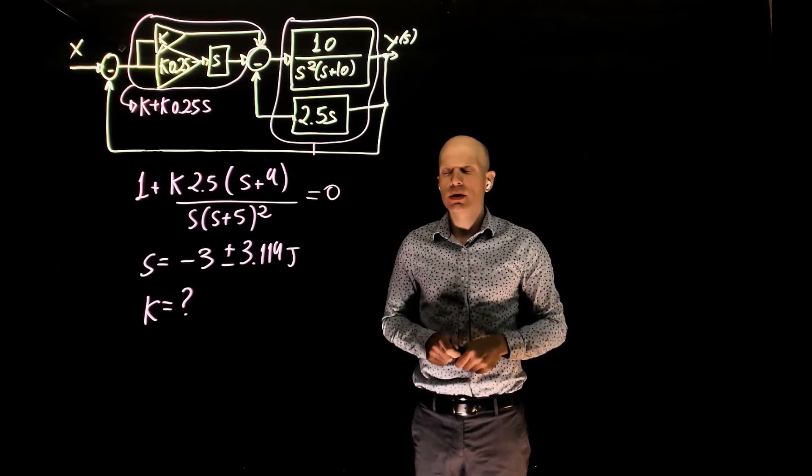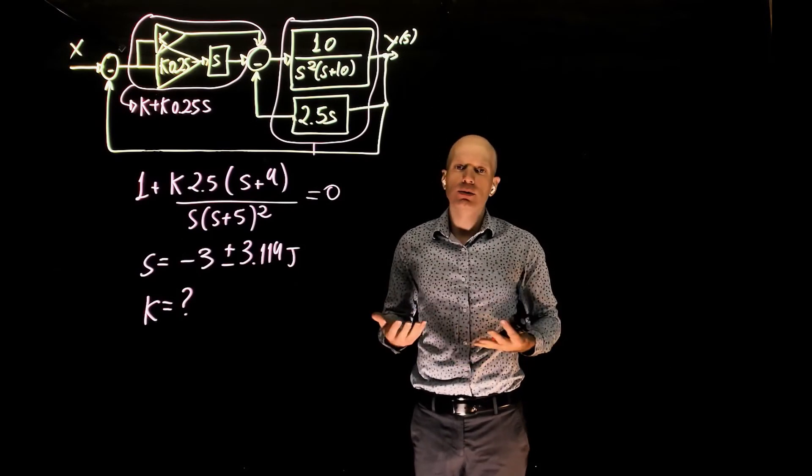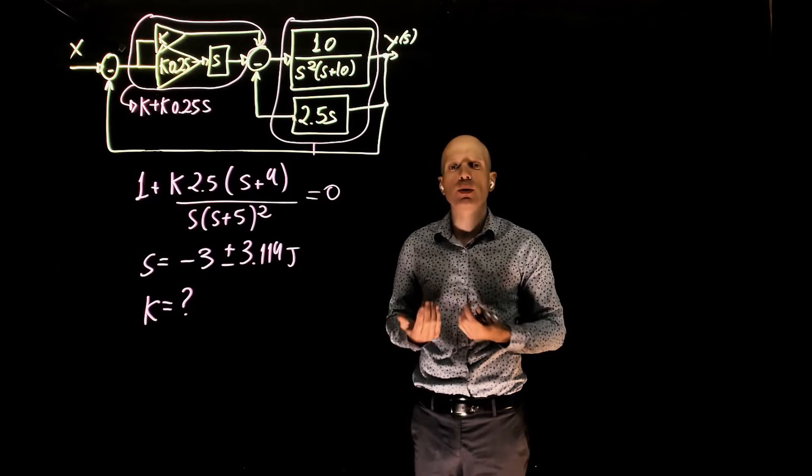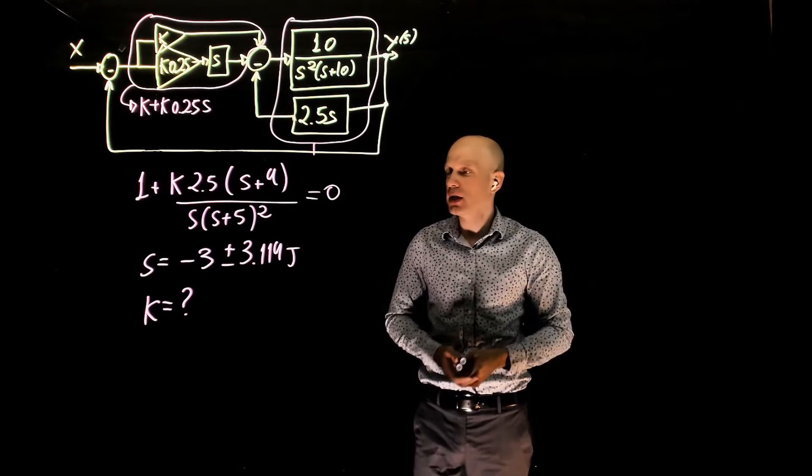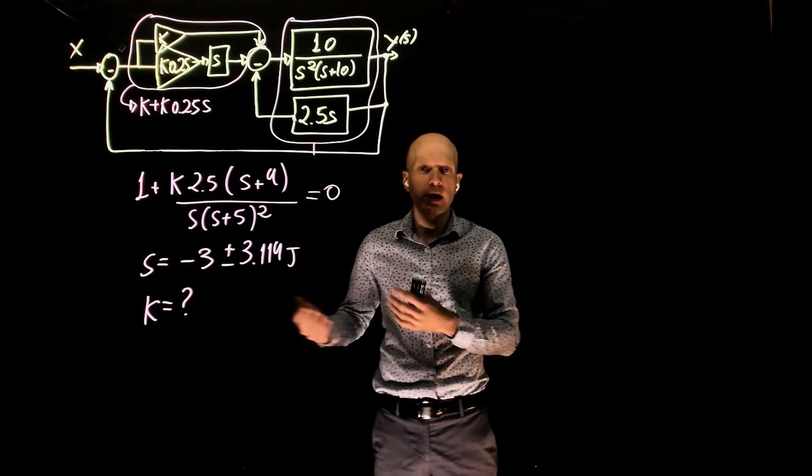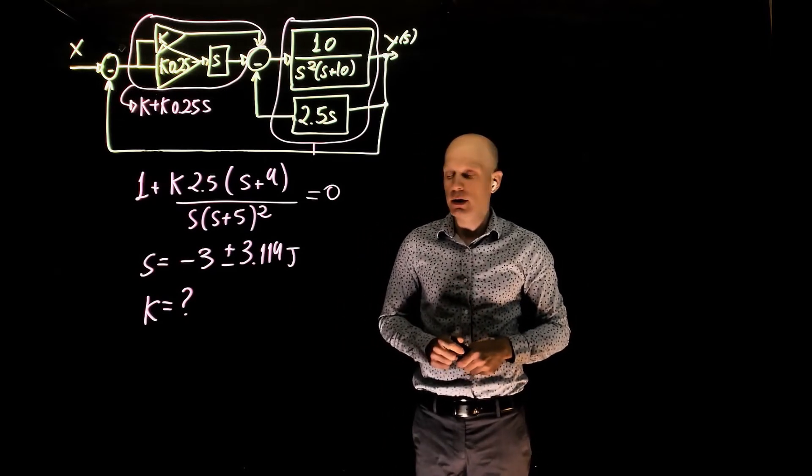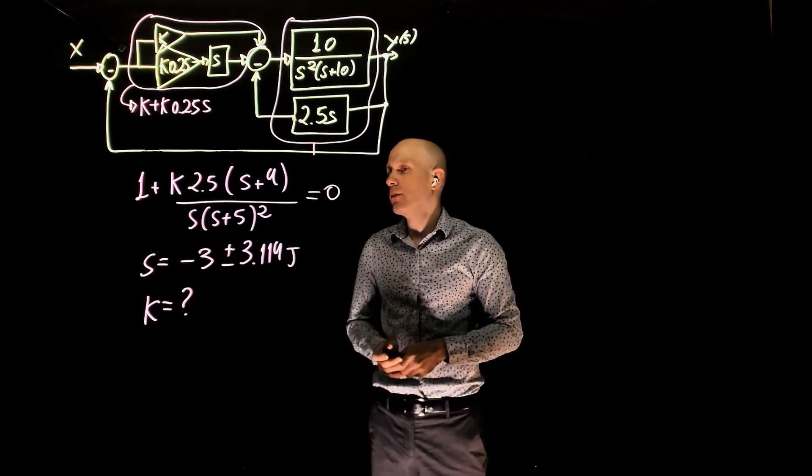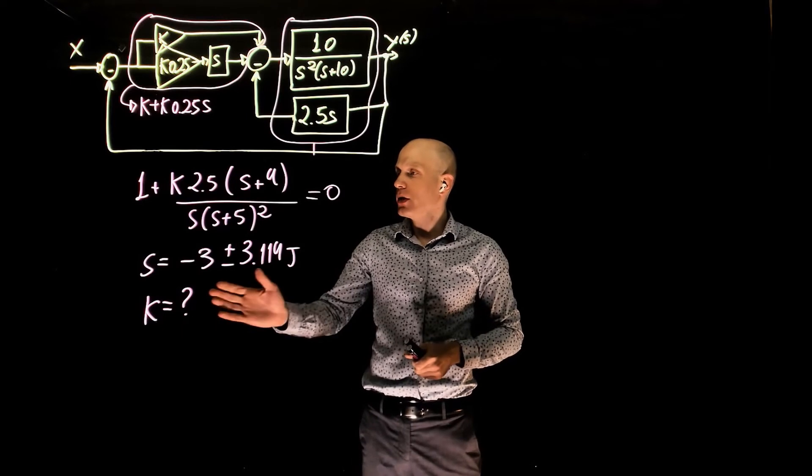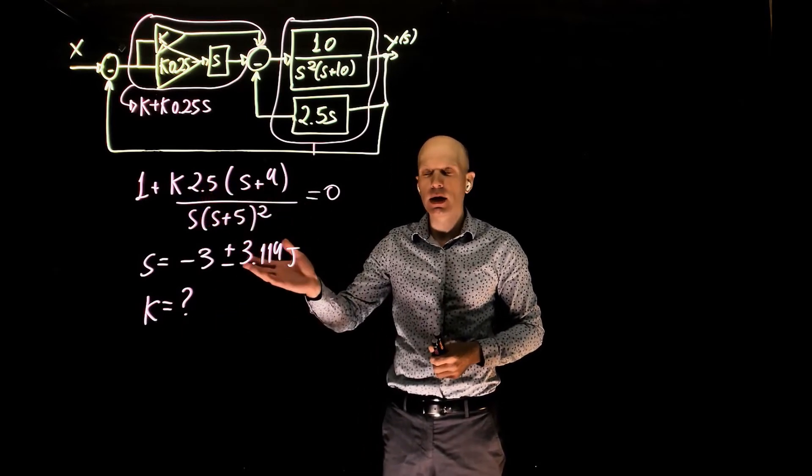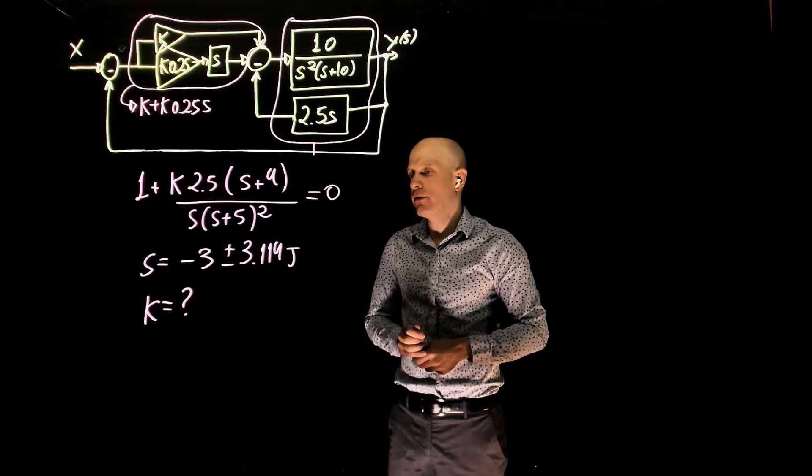So to recap what we just did, the problem is to specify a maximum allowed overshoot, from which we determine the damping ratio. Using the damping ratio and the root locus analysis, we find that this is the pole that gives, that meets that requirement. Now, what is the value of k? To find the value of k, we now need to analyze the characteristic equation and evaluate that at this specific value of s.